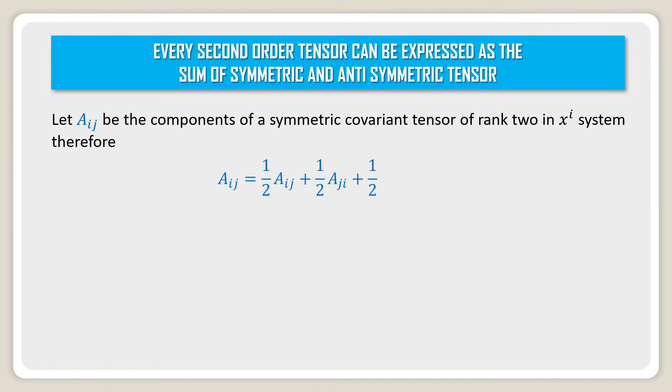Therefore Aij can be written as (1/2)Aij + (1/2)Aji + (1/2)Aij - (1/2)Aji. This can be regrouped as (1/2)(Aij + Aji) + (1/2)(Aij - Aji).